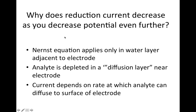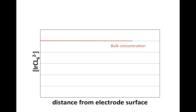This is where the transport effect comes in. The Nernst equation really only applies to the concentration of reduced and oxidized hexachloroiridate right next to the electrode — that's where things are at equilibrium. But the analyte is going to start getting depleted near the electrode. The oxidized hexachloroiridate will start to be depleted, you set up a diffusion layer, and the current is going to depend on the rate at which the analyte can diffuse to the surface of the electrode.